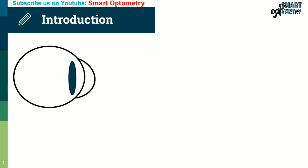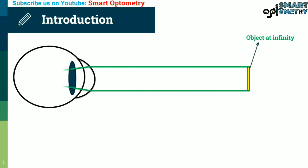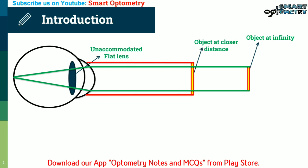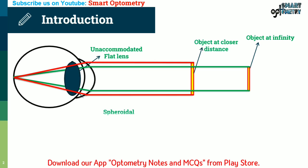In an emmetropic eye, if an object is at 6 meters or infinity, the light rays coming from that object focus on the retina. But if the object is brought closer than 6 meters, our eyes need more converging power to focus on the retina. Accommodation is the mechanism through which our eyes increase the converging power to focus on the retina when the object is closer than 6 meters.